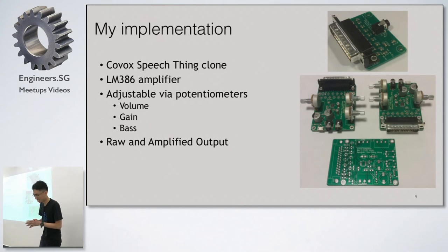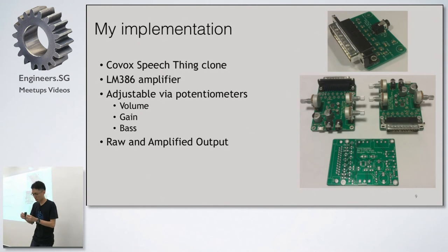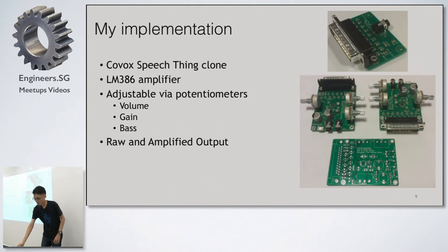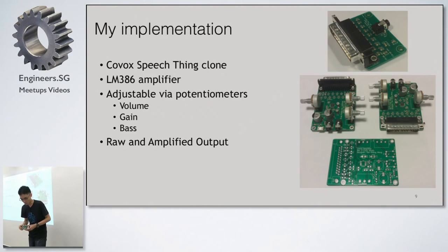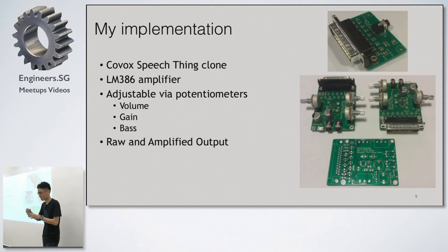This is my implementation — I cloned the Covox Speech Thing since I couldn't find one online; apparently they're quite rare these days. I'm passing around my initial prototype without the amplifier. My device has two audio output jacks: one raw output in case you want to use your own amplifier, and one amplified output from the LM386.